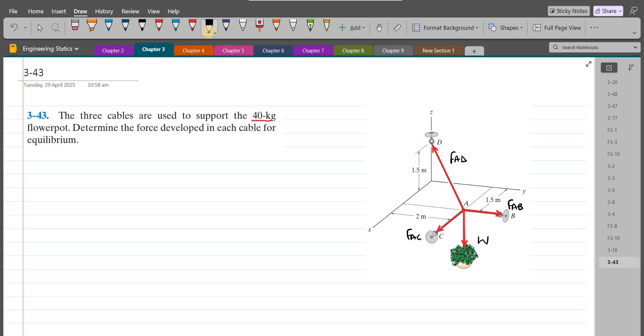Force FAC is only directed along the x-axis. So in terms of Cartesian vector form, we have FACI plus 0J plus 0K. The force FAB is only directed along the y-axis, so we have 0I plus FABj plus 0K.